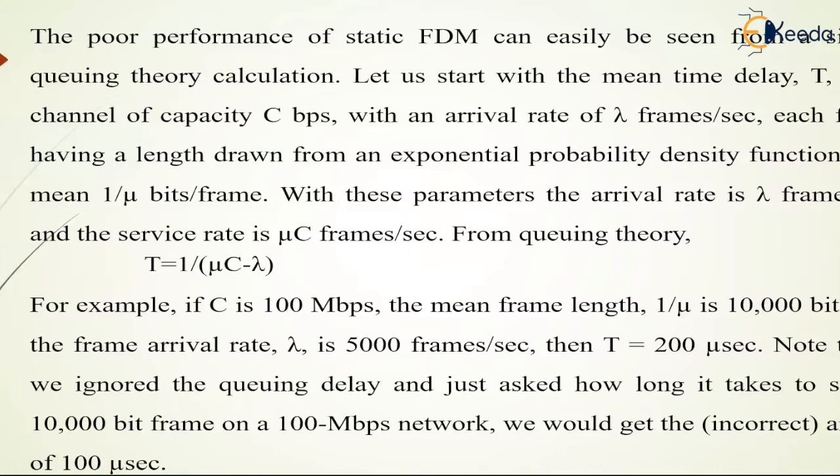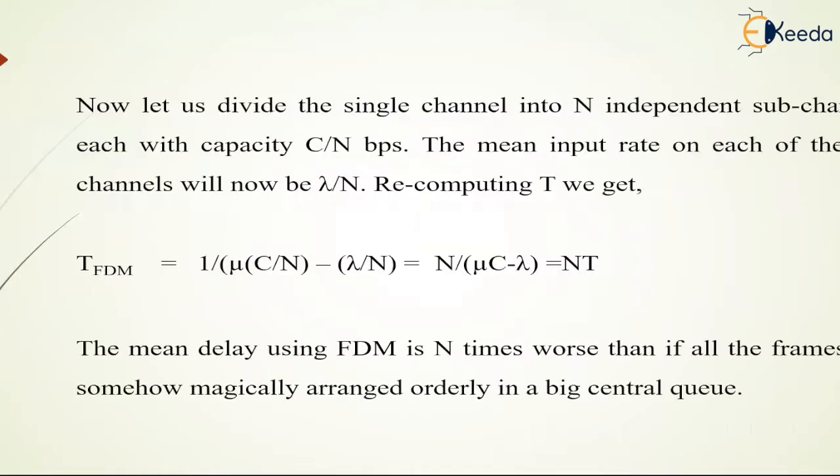Now let's divide a single channel into N independent sub-channels, each with capacity C/N bits per second. The mean input rate on each of the sub-channels will be lambda/N.